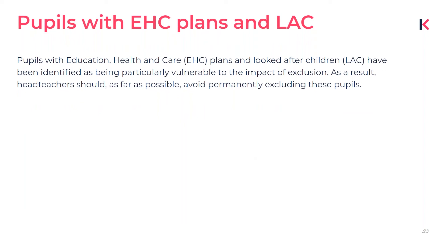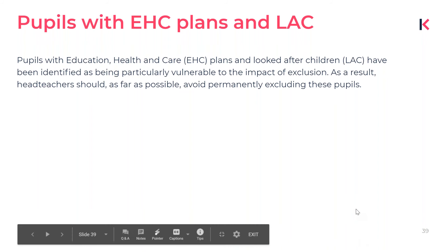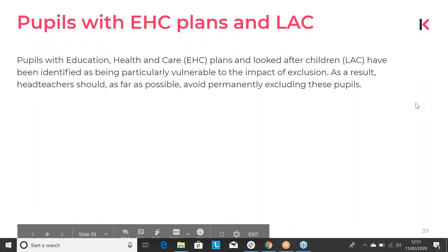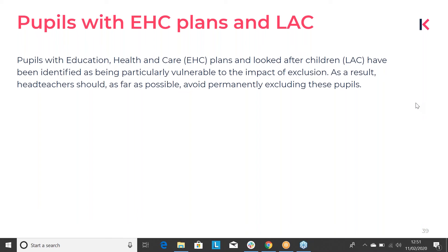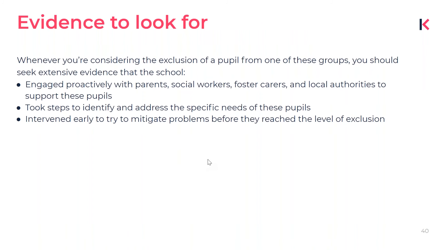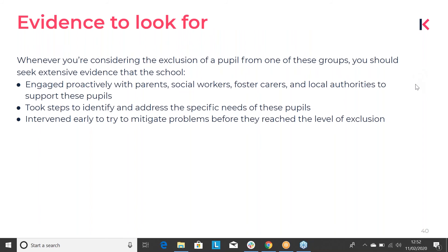Pupils with Education, Health and Care plans and looked after children are particularly vulnerable to the impact of exclusion. The guidance says that headteachers should, as far as possible, avoid permanently excluding these pupils. Whenever these pupils come before you, you need to take a closer look at the circumstances and look for evidence that the school has taken every step to prevent that exclusion — including evidence that the school engaged proactively with parents, social workers, foster carers, and the local authority, and took steps to identify needs and intervene early.